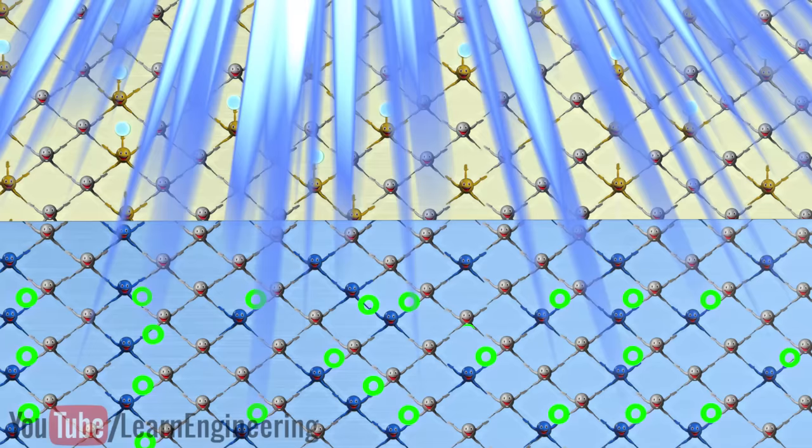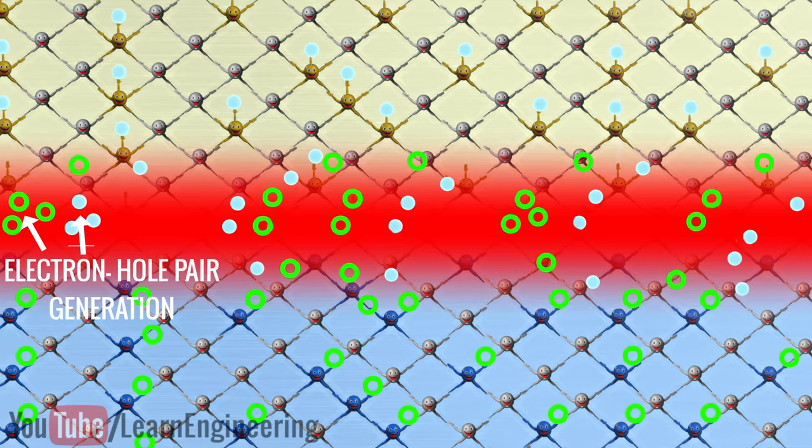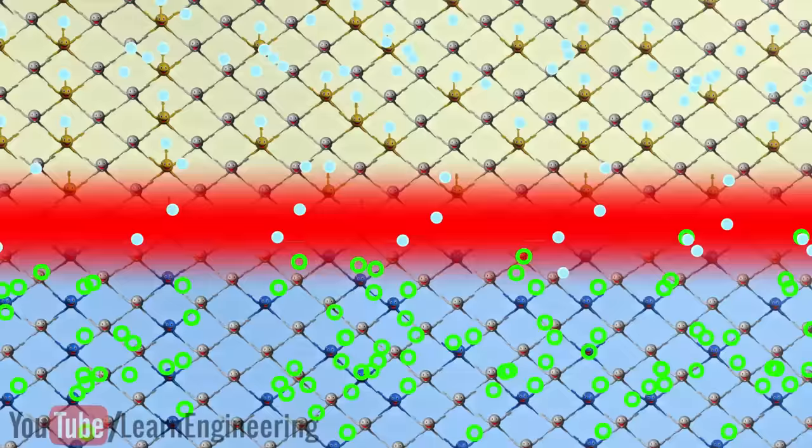This photon energy is sufficient to generate electron-hole pairs in the depletion region. The electric field in the depletion region drives the electrons and holes out of the depletion region. Here we observe that the concentration of electrons in the N region and holes in the P region becomes so high that a potential difference will develop between them.